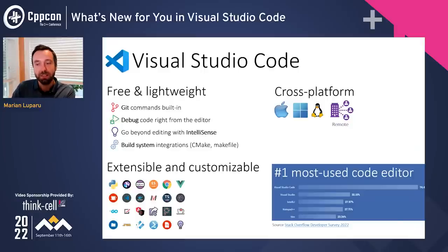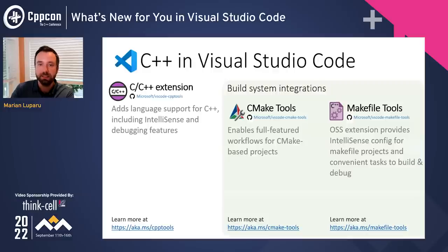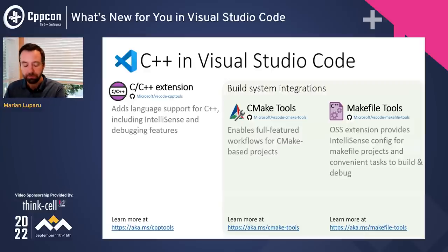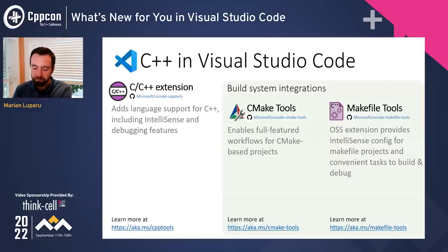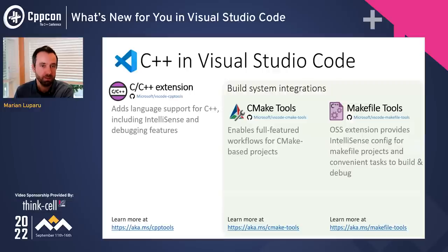VS Code is cross-platform — it runs on Mac, Windows, Linux, or even in the browser. Whether you need to connect remotely to an intranet machine or to a VM, container, WSL, or embedded device in the cloud, you get the same consistent experience. For C++ specifically, you'll primarily interact with three extensions: CppTools for C++ language support including IntelliSense and debugging, CMake Tools for a full-featured CMake workflow, and Makefile Tools for Makefile projects.